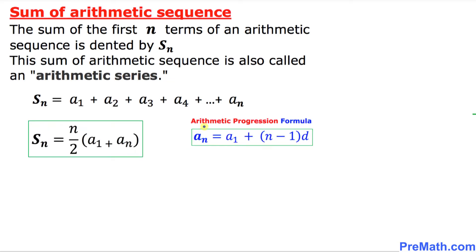We also note that the arithmetic progression formula is a sub n equal to a sub 1 plus n minus 1 times d. Wherever you see in this formula a sub n, I'm going to replace a sub n by whatever this quantity is here.